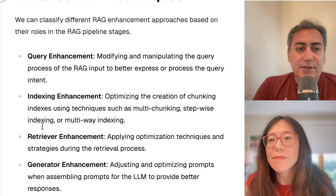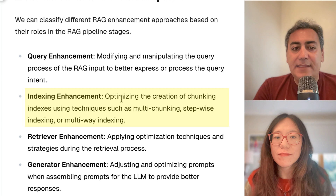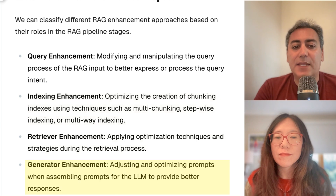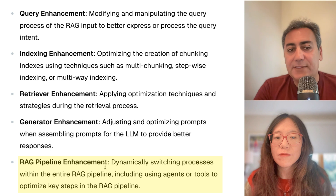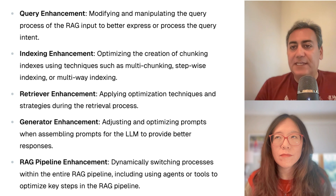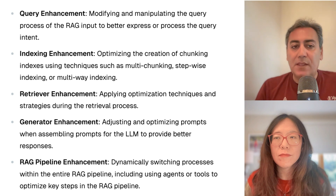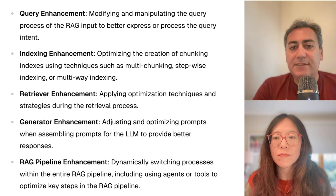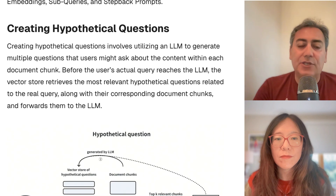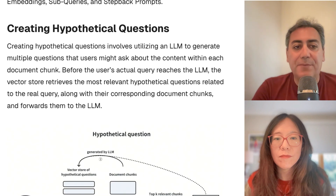You can see here: query enhancement, indexing enhancement, retriever enhancement, generator enhancement, and pipeline enhancement. Each one of these categories includes a bunch of techniques that you can implement to improve your RAG-based system. Now let's take a look at just some of them.